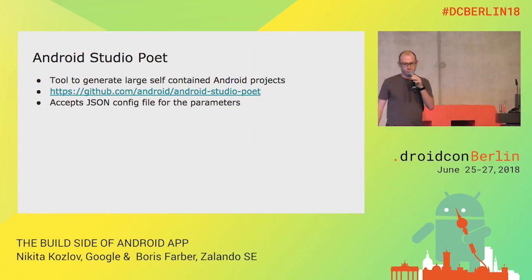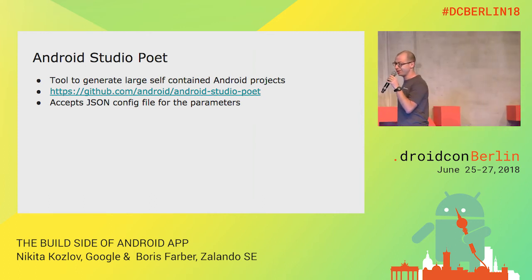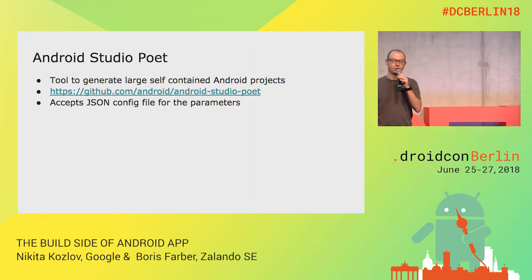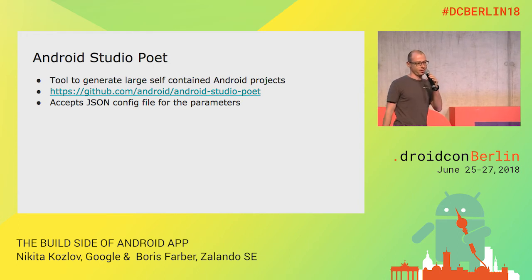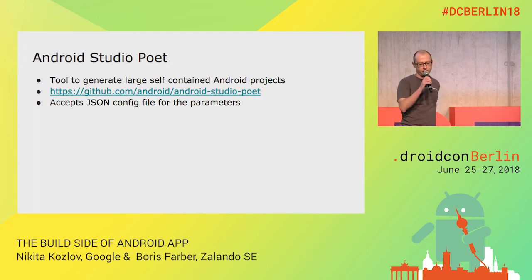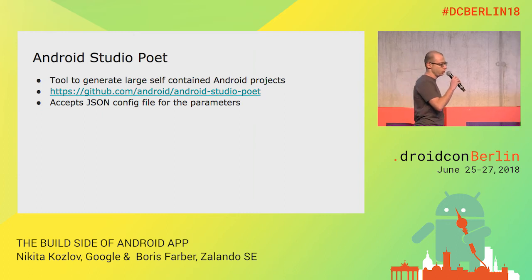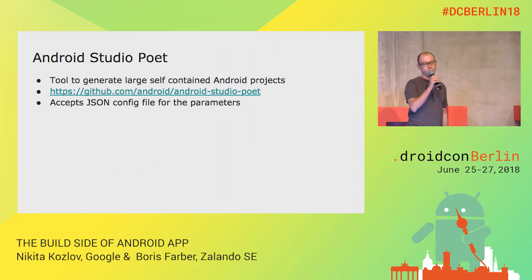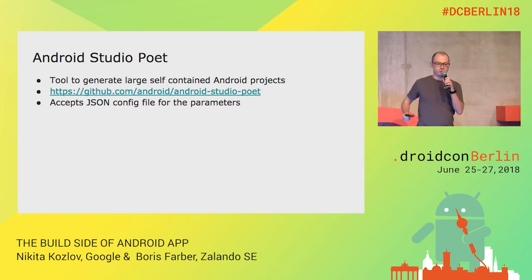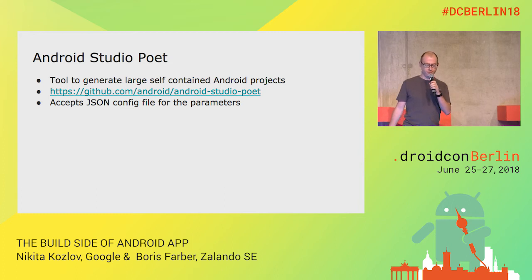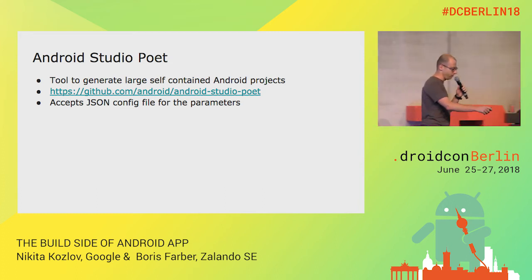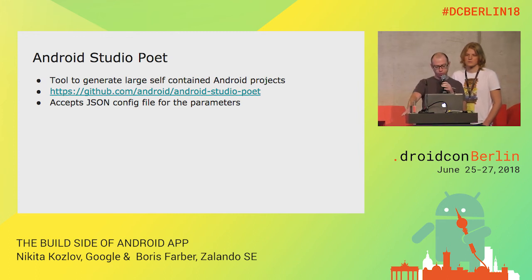Now the fun stuff. I guess all of you are thinking: these guys showed us nice numbers, but we all have our own real-life projects to work on tomorrow. Here is our solution — we want to introduce Android Studio Poet, a library that we use to generate sample projects, so you can mimic and synthesize a test project which has a similar configuration as your own app. Android Studio Poet is an open-source project hosted on GitHub.